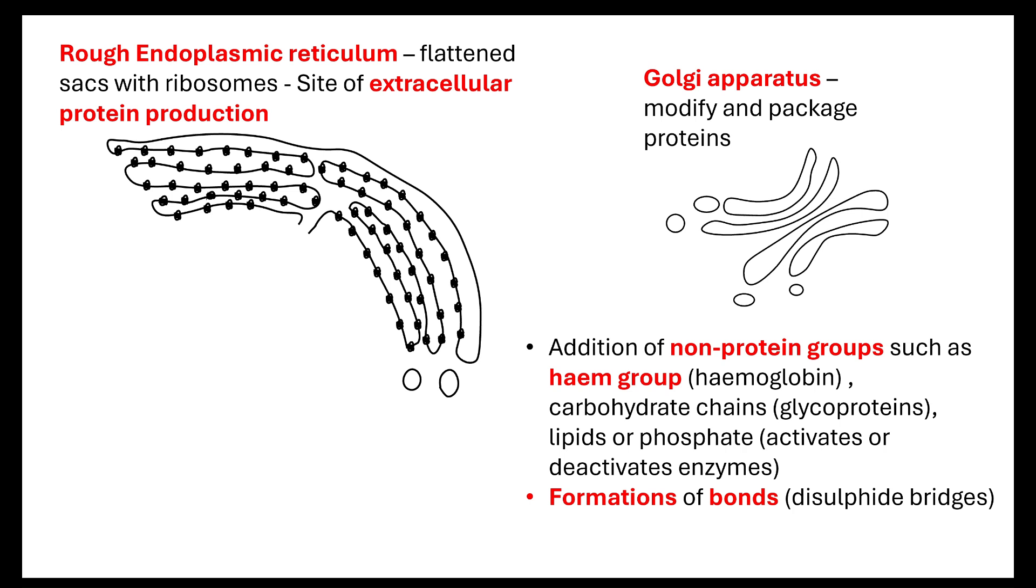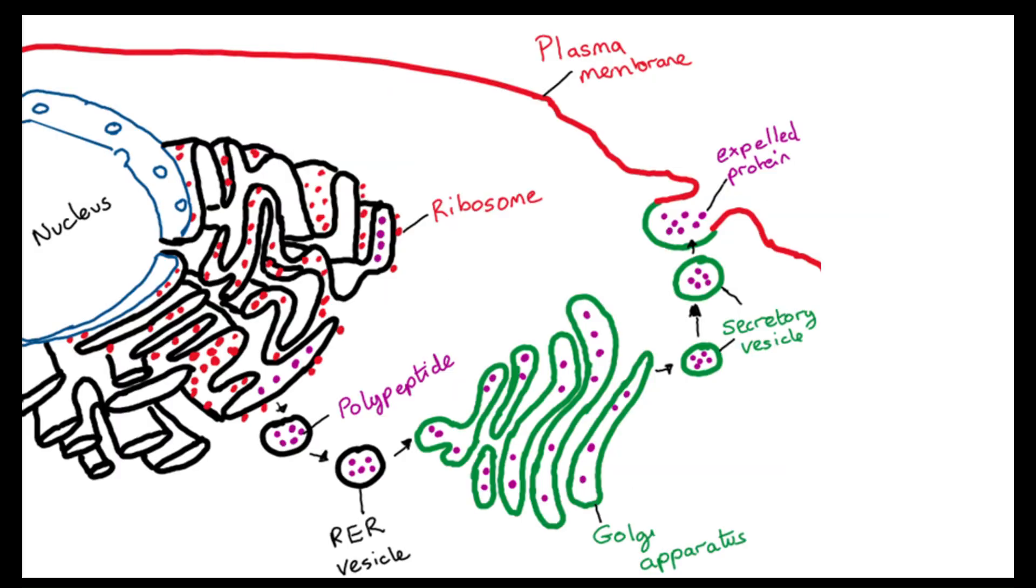And again, it's going to be packaged into a vesicle, a vesicle that can be moved by the cytoskeleton. So when we look at the production of proteins that are extracellular proteins, proteins that are going to leave the cell, they always follow the same path. They are made by the rough endoplasmic reticulum, the ribosomes on the rough endoplasmic reticulum. They are then transported by RER vesicles to the Golgi apparatus. Then they are transported by secretory vesicles to the plasma membrane to be expelled.